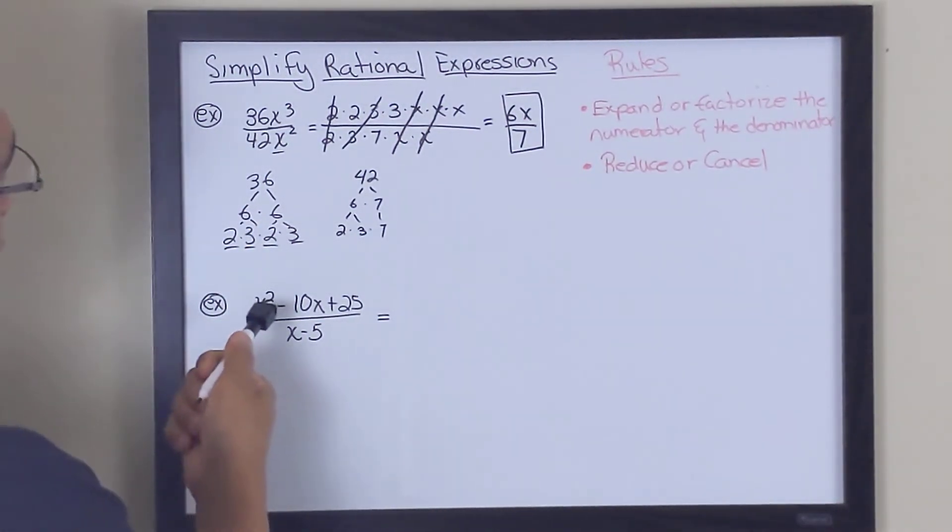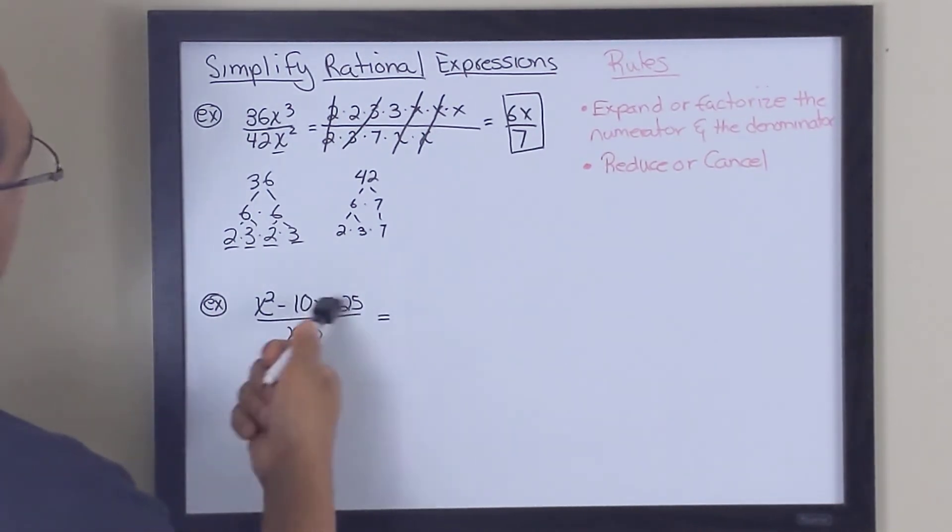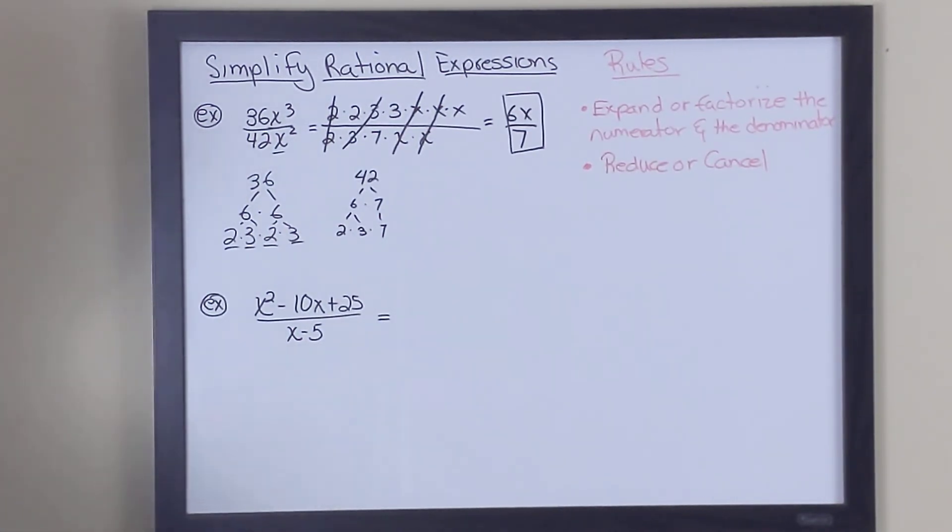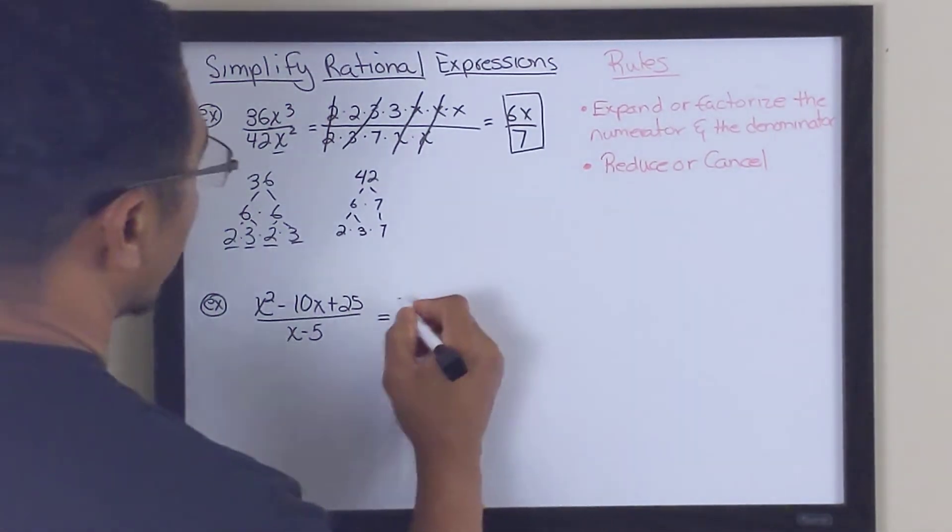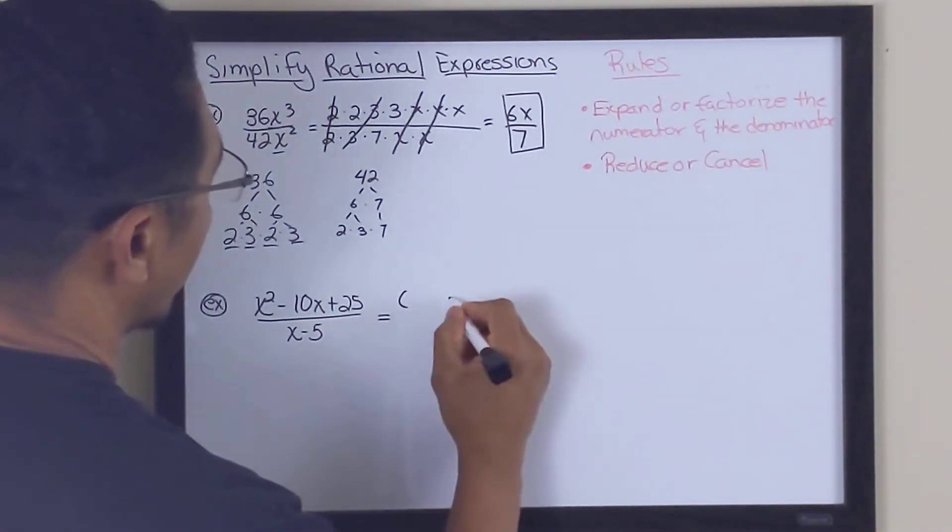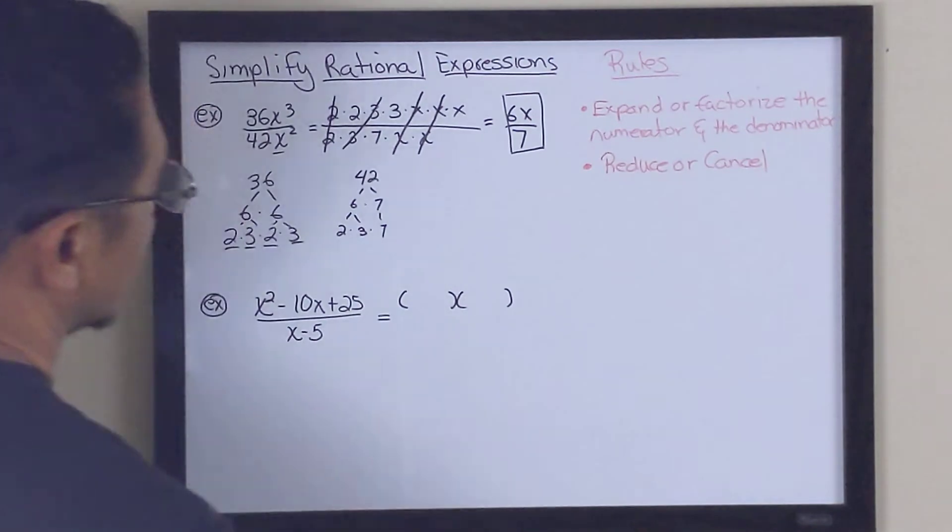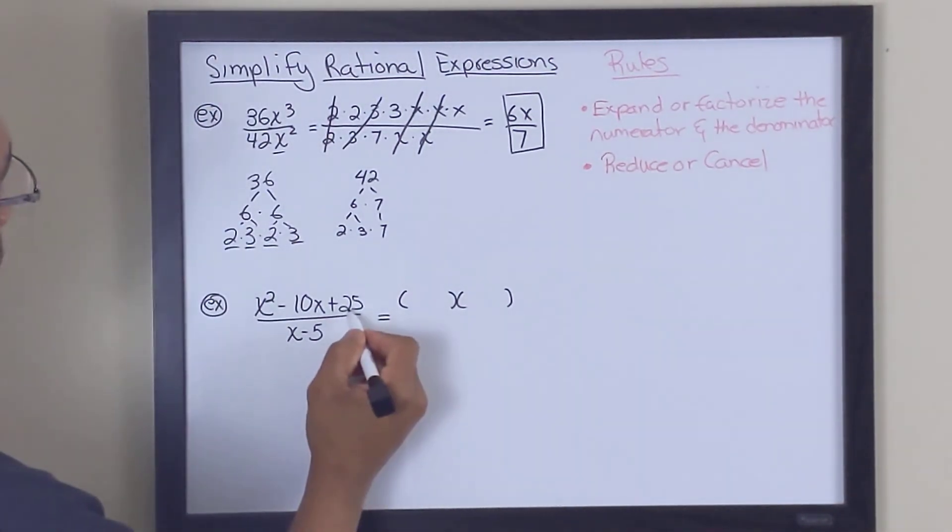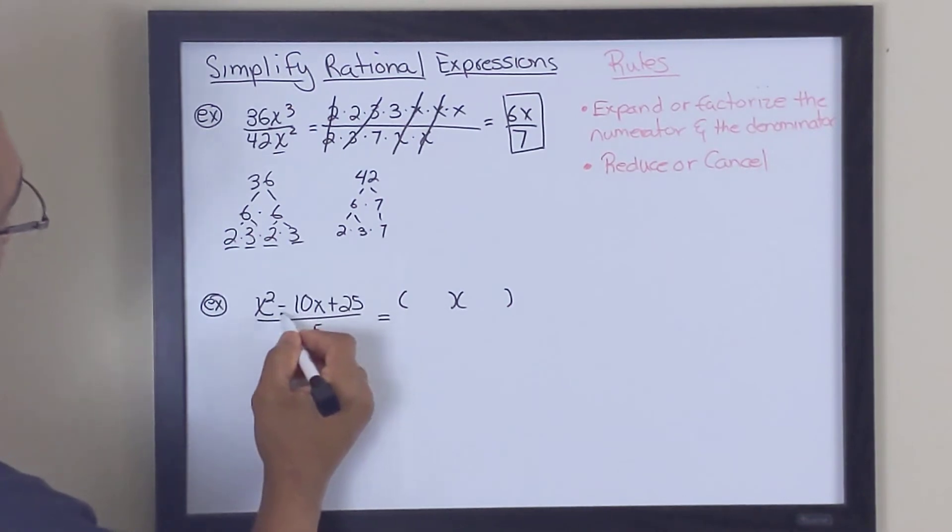When we're factoring a trinomial, in this case, the way we factor this is with a method called either a is equals to 1 factoring or a perfect trinomial square. And for this particular purpose, we're going to go ahead and break down the numerator using a is equals to 1. Meaning, we're going to look for two numbers. When we multiply them together, we get 25. And when we add those same two numbers, we get a negative 10.